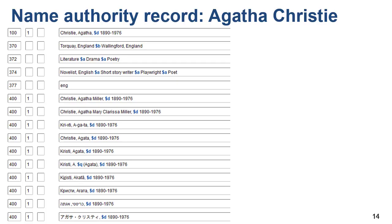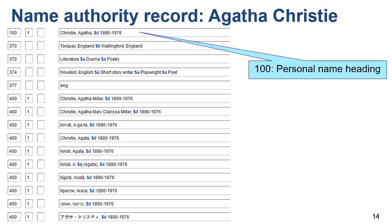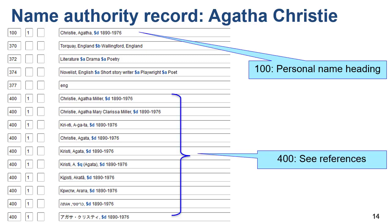This is an authority record for Agatha Christie. The authorized form of the name appears in the 100 field: Christie, Agatha, with the dates 1890–1976. This is the heading that should appear in a 100 or 700 personal name field in a bibliographic record, or in a 600 field if the name is being used as a subject. There are several 400 fields or C references in this record — they're not valid in bibliographic records, but they refer to the 100 valid form of the heading, Christie, Agatha, with the dates.